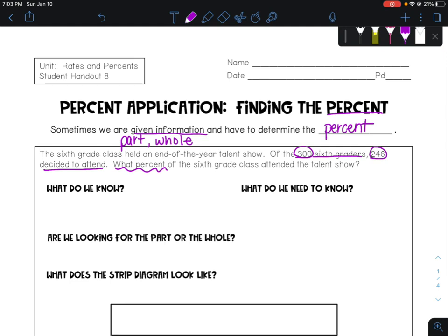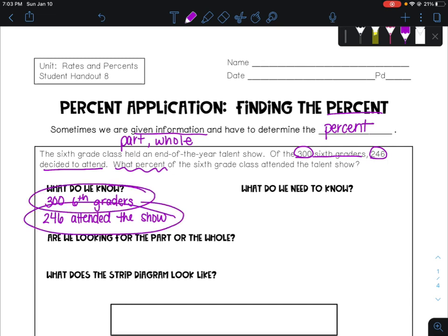So let's first look and see what we know. We know that we have 300 sixth graders, and we know that 246 of them attended the talent show. So looking at these two things and knowing that we are dealing with problems where we don't know the percent...